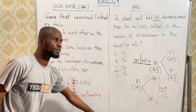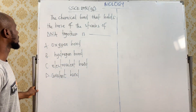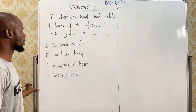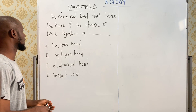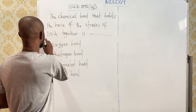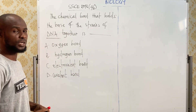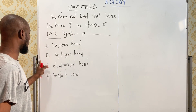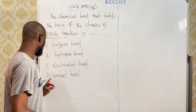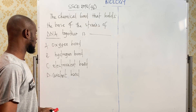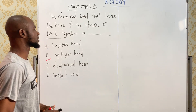Let's move to question 46. The chemical bond that holds the base strands of DNA together is — A, oxygen bond; B, hydrogen bond; C, electrovalent bond; and D, covalent bond. The answer is hydrogen bond.